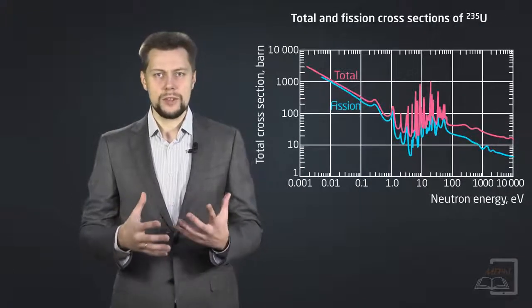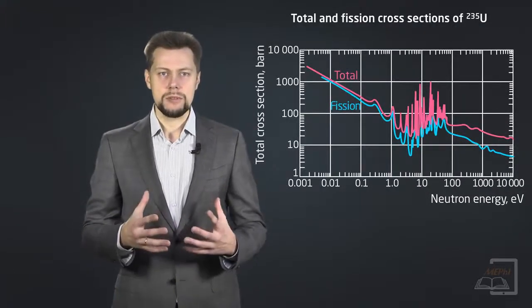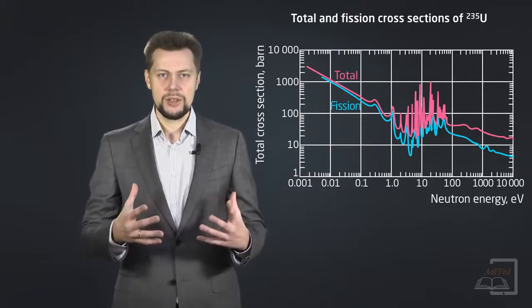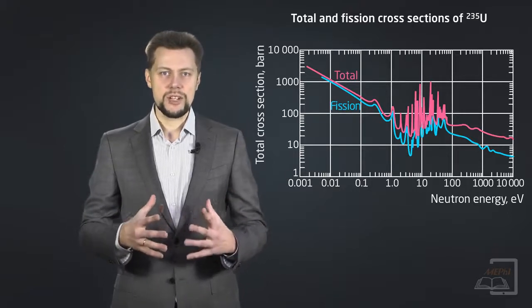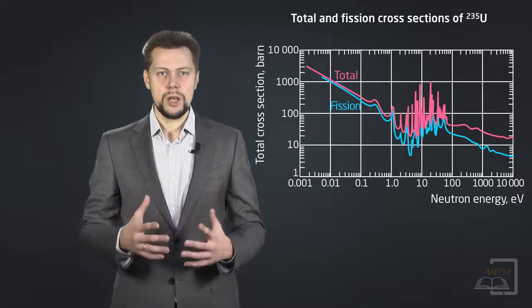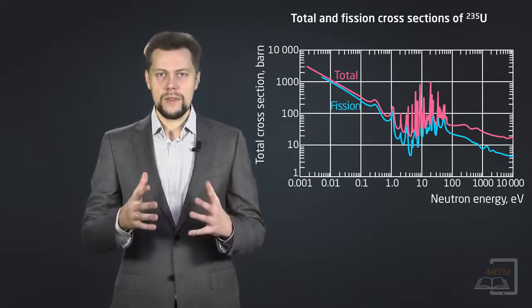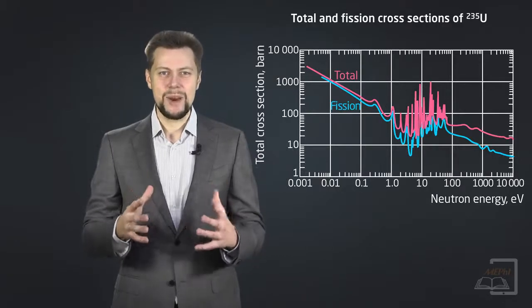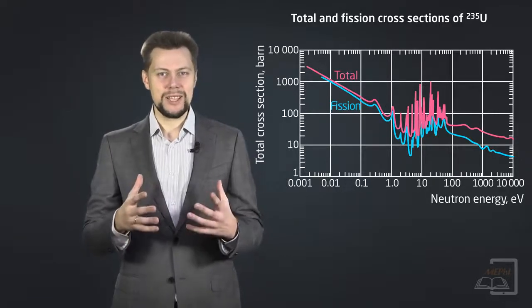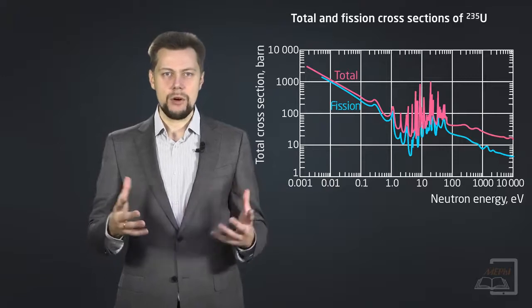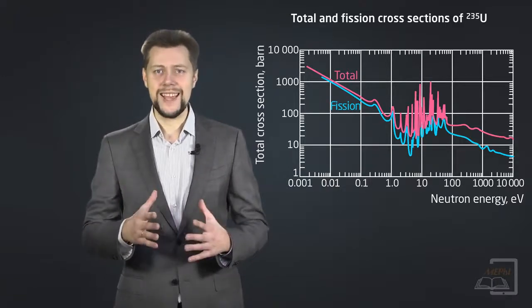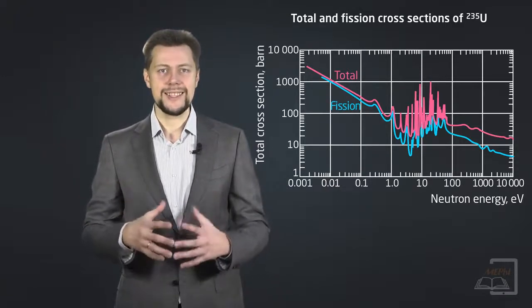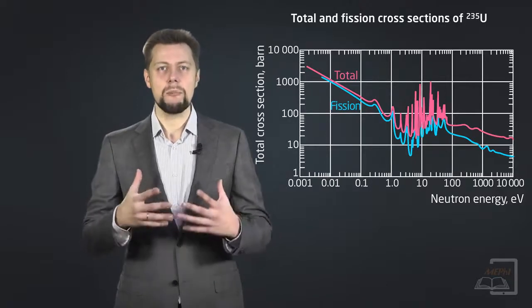After the 1/v region for slow neutrons, there is a resonance region, which corresponds generally to a neutron energy between 0.1 to 1000 eV. This region is characterized by the presence of several peaks corresponding to a certain value of neutron energy. These energies are related to excitation energy levels of the compound nucleus.